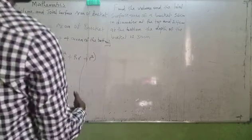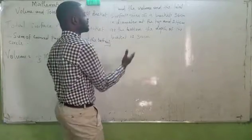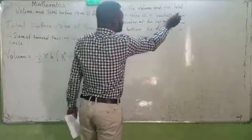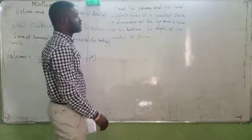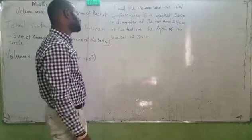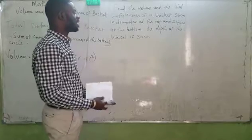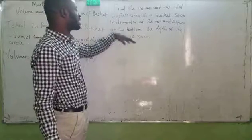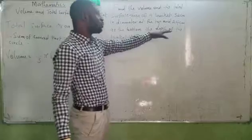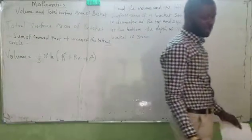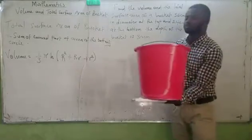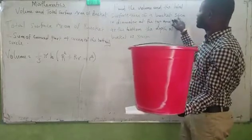Look at this question. Find the volume and the total surface area of the bucket 36 cm in diameter at the top and 24 cm diameter at the bottom. The depth of the bucket is 30 cm. That is what we are talking about. This is the top, 36 cm.